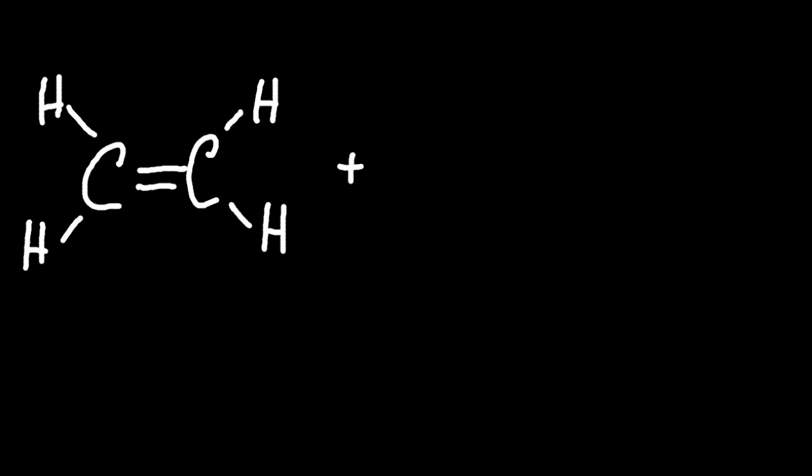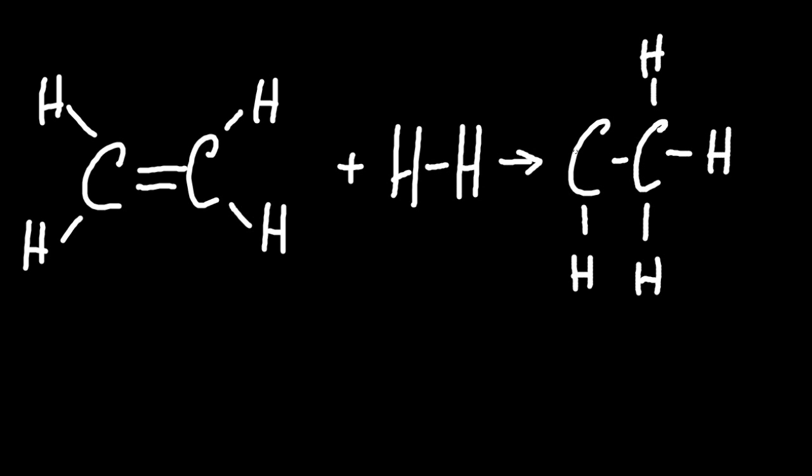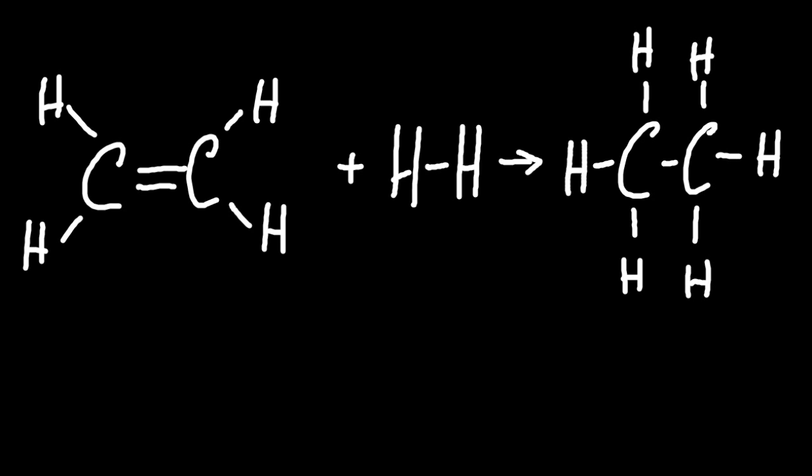If you have an alkene, you can hydrogenate it to make an alkane. And for that, you're going to need a catalyst. And that catalyst would be nickel. Why would you want to do that?